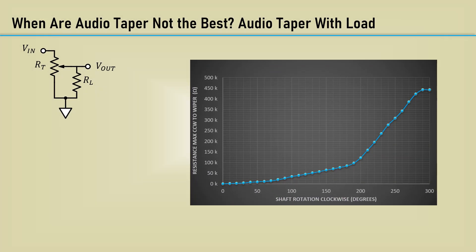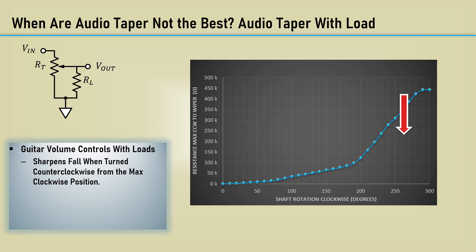When are audio taper potentiometers not the best? It's when there is a considerable load on the wiper of the pot. As an example, guitar volume controls often have various loads. It sharpens the fall off when turned counterclockwise from the max clockwise position. Guitar volume controls are usually run at or near max clockwise, unlike radio or TV. Radio or TV would rarely be operated at full volume. The possible guitar loads span a large range.